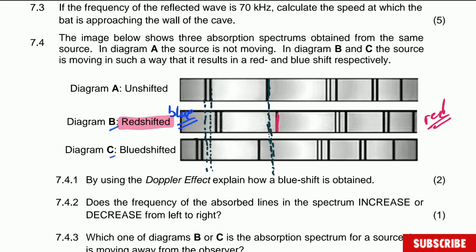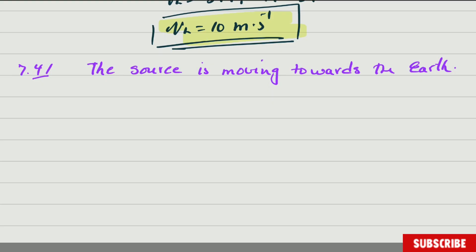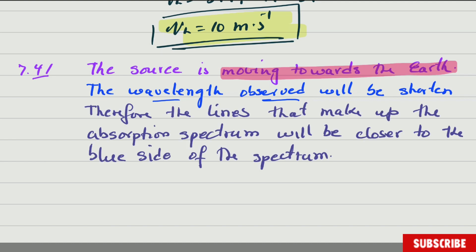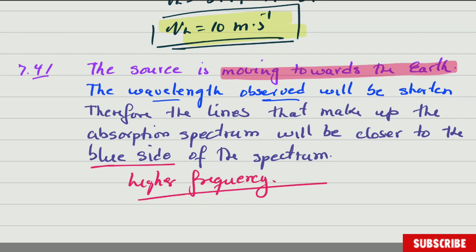Question 7.4.1: Using the Doppler effect, explain how a blue shift is obtained. The source is moving towards the observer. When the source moves towards the listener, the wavelength observed is shortened because the waves are compressed. The lines in the absorption spectrum shift closer to the blue side of the spectrum. The blue side is the side with higher frequency.